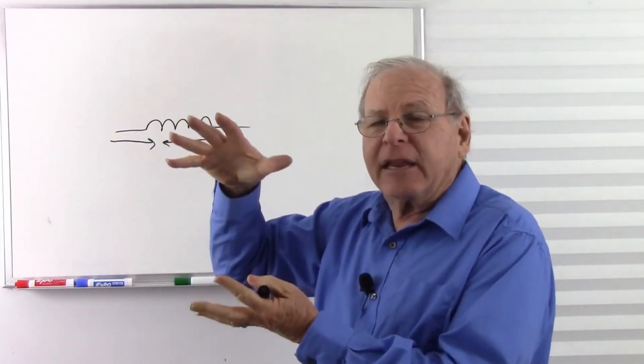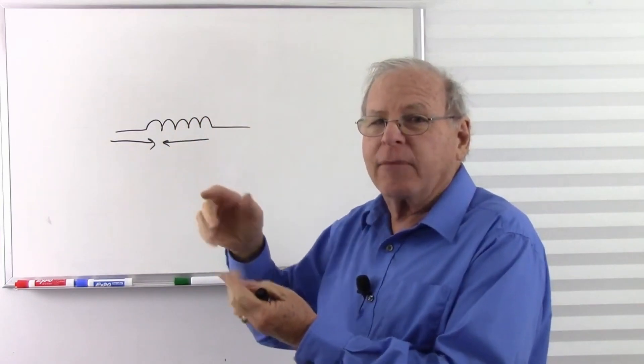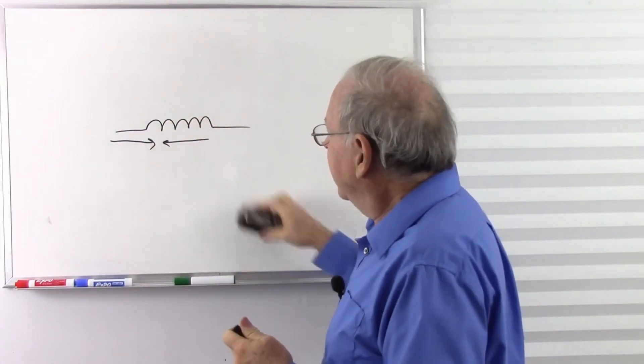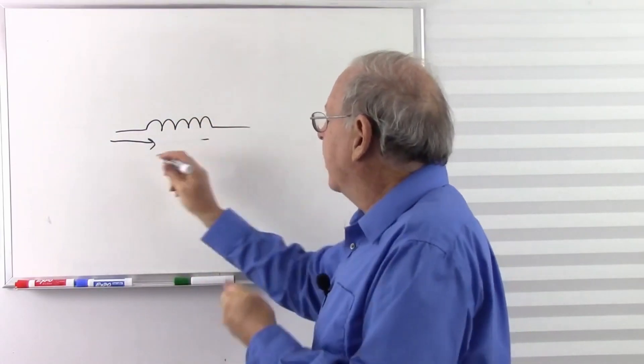But after a while, that magnetic field stops moving. It only pushes back when the magnetic field is building. Once it is built and stable, it stops pushing, and so the current goes right on through.